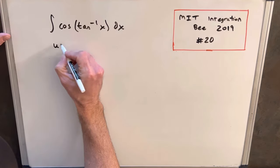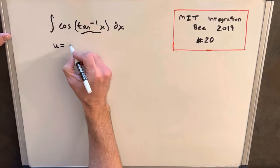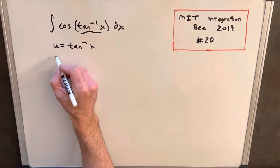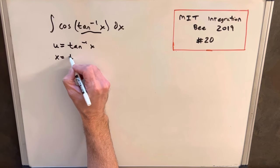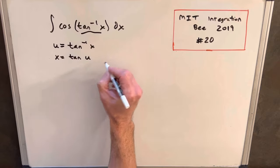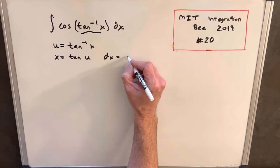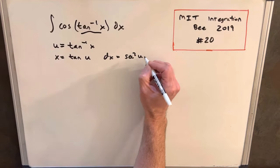So what I'm going to do is call u our tan inverse of x. We can also write x as tan of u, and then differentiating both sides, we have dx equals secant squared u du.